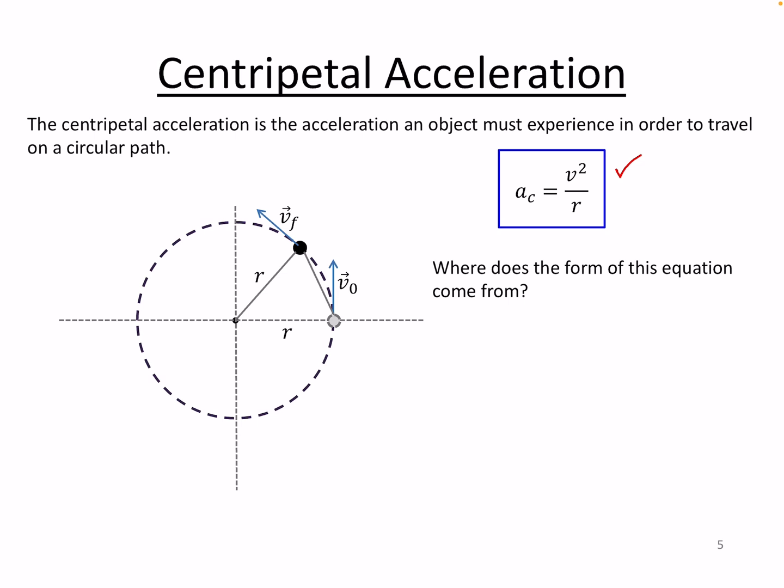Something has to be changing its velocity's direction, even if you're keeping the magnitude of that velocity constant. And the centripetal acceleration is the thing that does it.